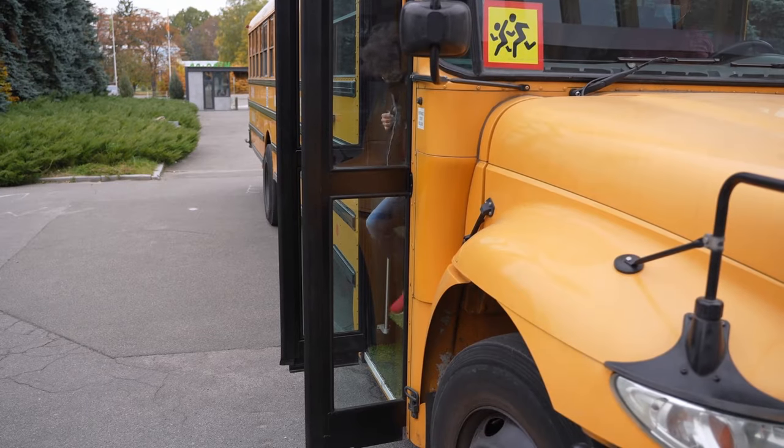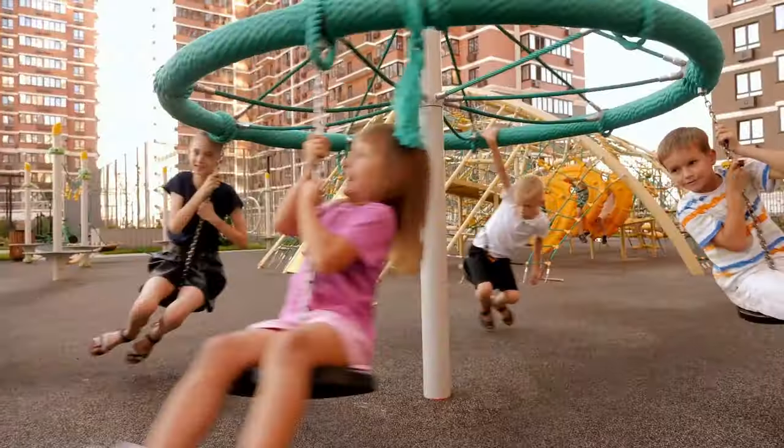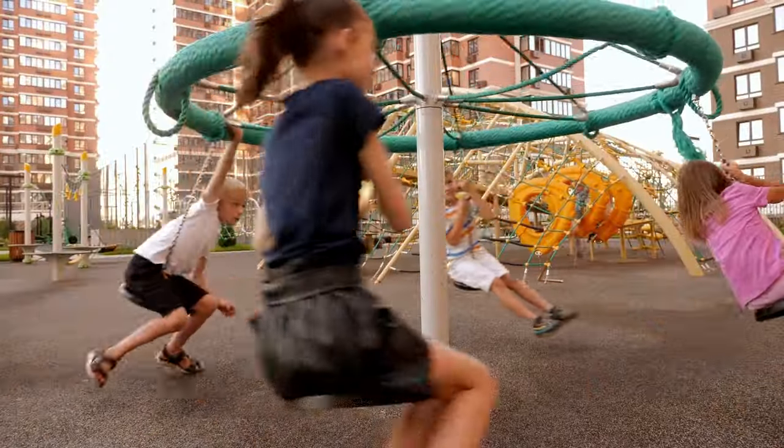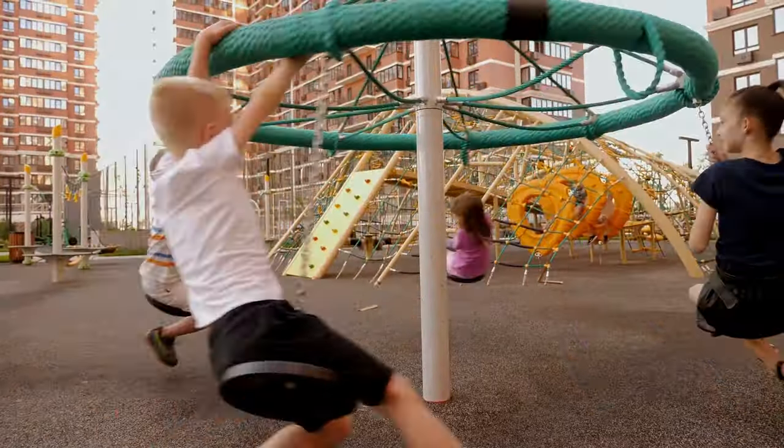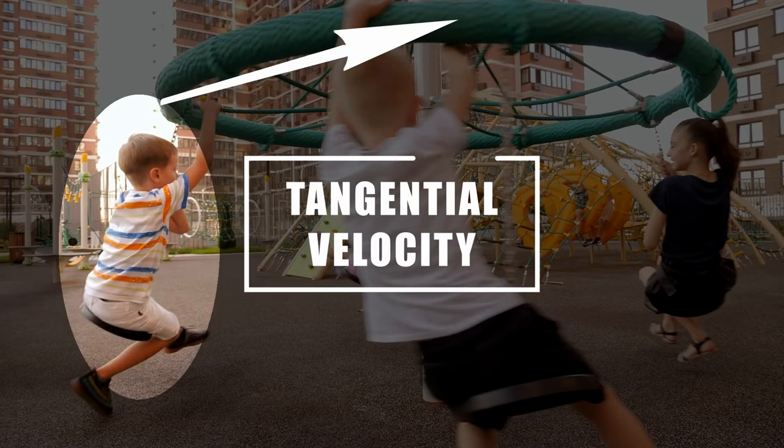Jumping off a moving bus is dangerous, so the conscious decision to make the jump evokes a wild sense of thrill. Jumping off the edge of a spinning carousel is the nine-year-old version of this daring move. In such moments, the individual has something known as tangential velocity.